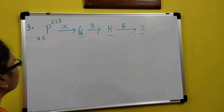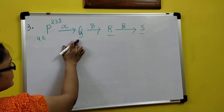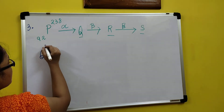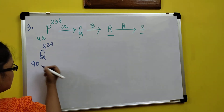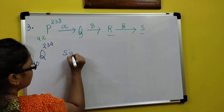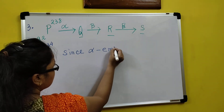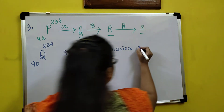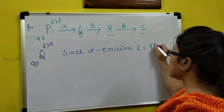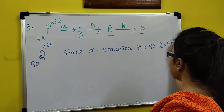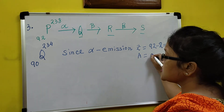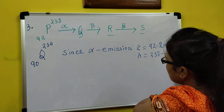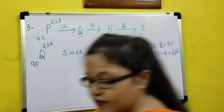First, since there is alpha emission, there will be a decrease of 2 in atomic number and minus 4 in mass number. So Q will have Z equal to 92 minus 2, that is 90, and mass number equal to 238 minus 4, that is 234. So Q is (234, 90). Done.